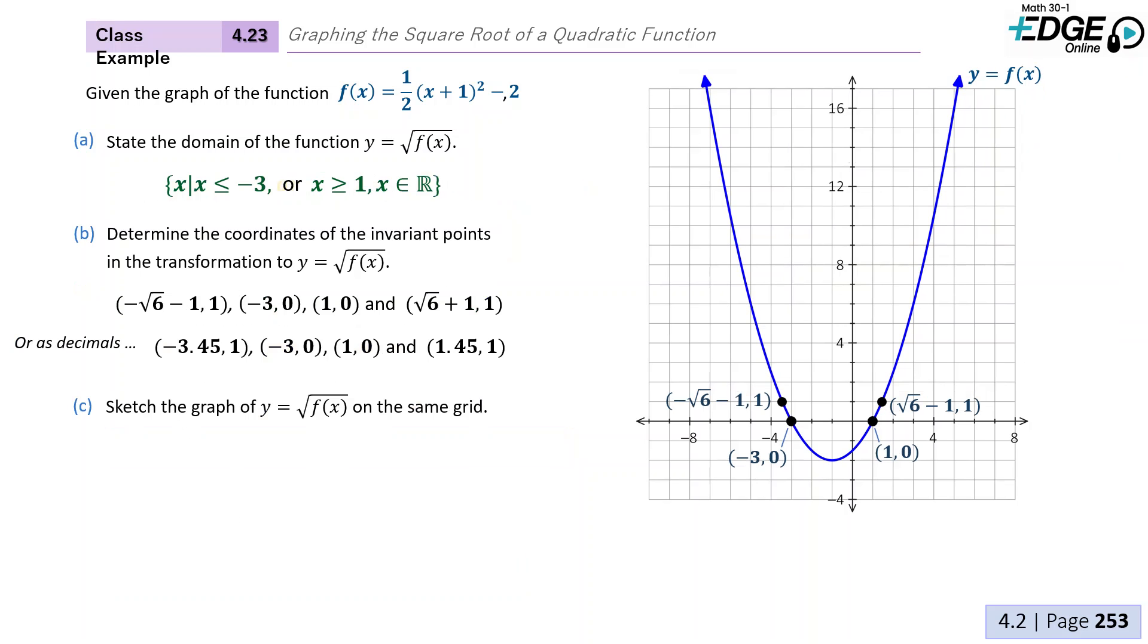Next, let's sketch the graph of y = √f(x) on the same grid. So the good news is we already have two points. We have our invariant points, so we should be partially set.